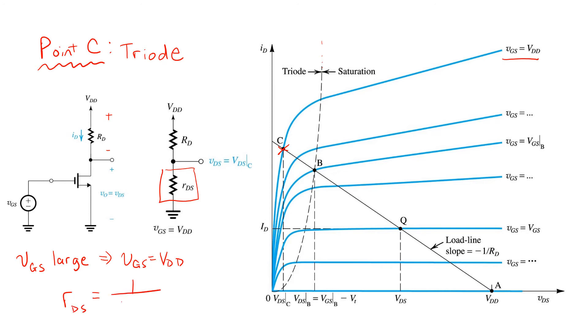which is inversely proportional to the overdrive voltage. In this case, the overdrive voltage is the applied value of VGS, which is VDD minus the threshold voltage.